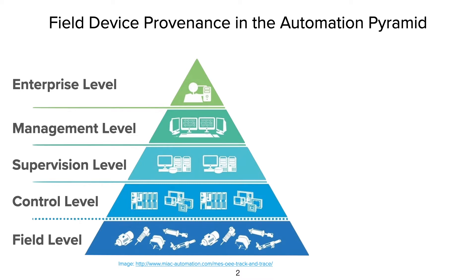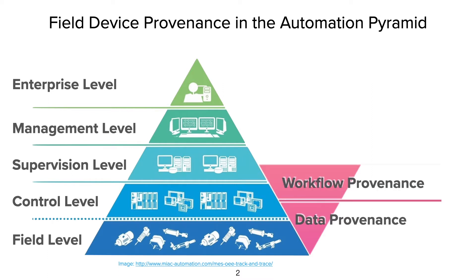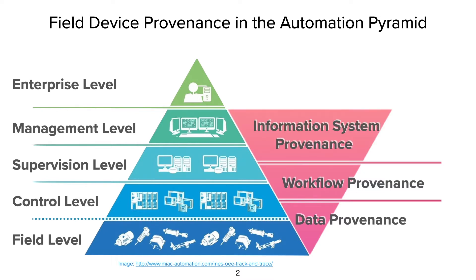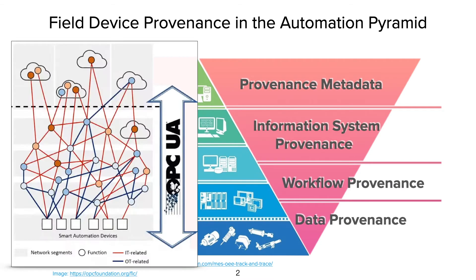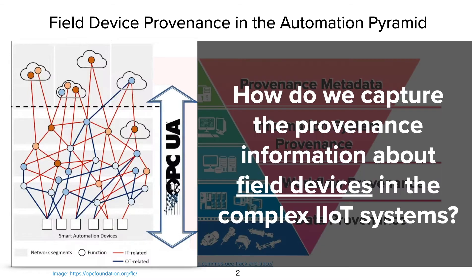When we think about provenance information about field devices, there are the data that goes to and comes from the devices, information about workflows related to the devices, information about how this provenance information can be derived from the system, and information about what the provenance information actually means. However, the provenance graphs are becoming more complex, and the question is: how do we capture the provenance information about field devices in complex IoT systems?